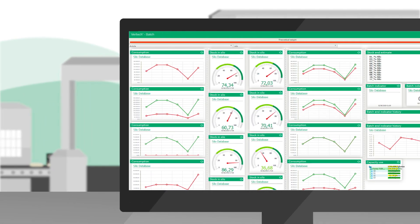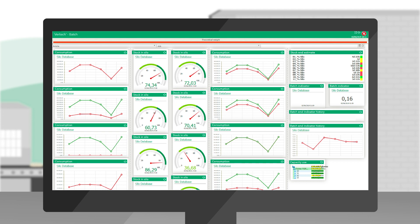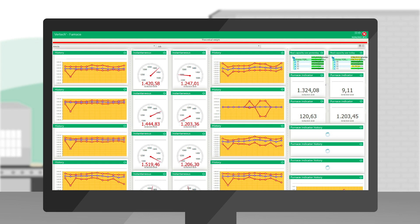For example, very precise information can be made available on consumption and stock of raw materials, theoretical and real recipes, and the use and percentage of cullet.